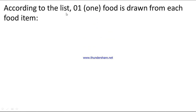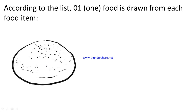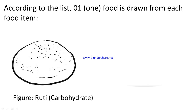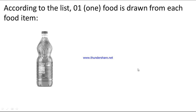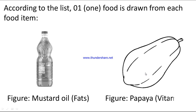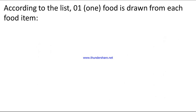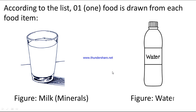According to the list, one food is drawn from each food item. This is a very easy picture of roti, representing carbohydrates. This figure is an egg, representing protein. A bottle of mustard oil represents fat. This is a fruit figure — papaya — representing vitamins. A glass of milk represents the source of minerals. And this is a water bottle figure, representing water.